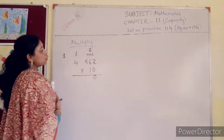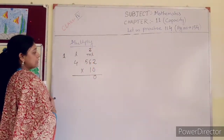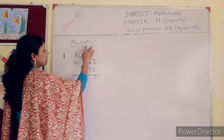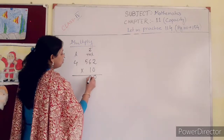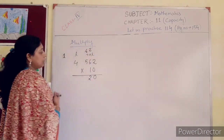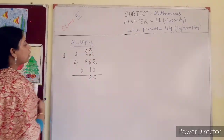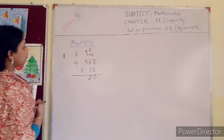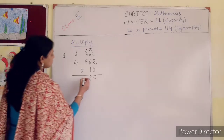10 into 6 is 60. 60 plus 2 is 62. 60 is in your hand. 10 into 5 is 50. 50 plus 6 is 56.